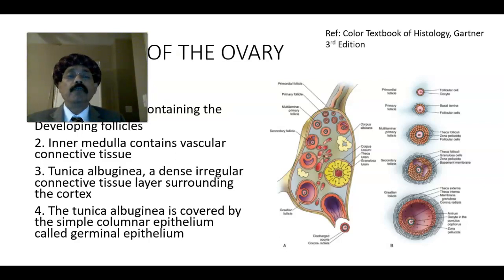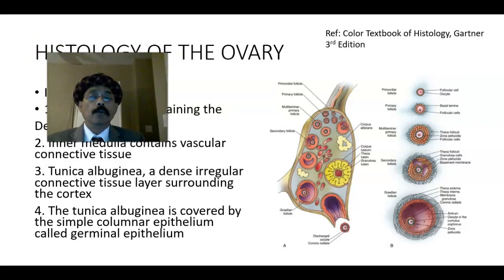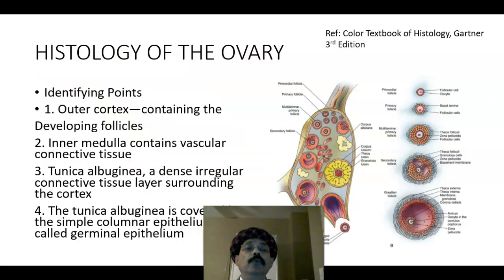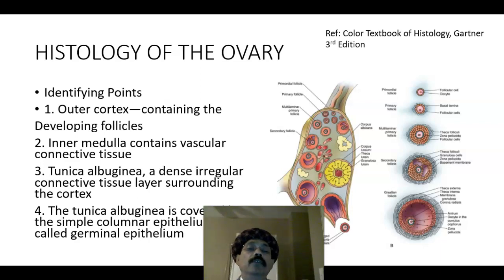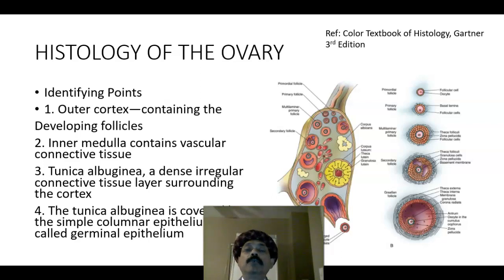The ovary is the female gonad. It produces the ovum and it also produces hormones like estrogen and progesterone. So in that sense, it is a mixed gland, both exocrine and endocrine. So what are the identifying points for the ovary?